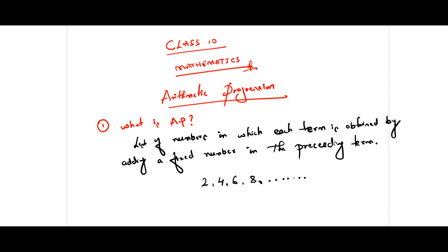Before we start the problems, I just want to ensure the basic things required in this chapter. AP is a list of numbers in which each term is obtained by adding a fixed number to the preceding term. The differences between consecutive terms — like 4 minus 2, 6 minus 4, 8 minus 6 — should all be constant. If you take the difference between succeeding term and preceding term and all values are constant, that is called as AP.